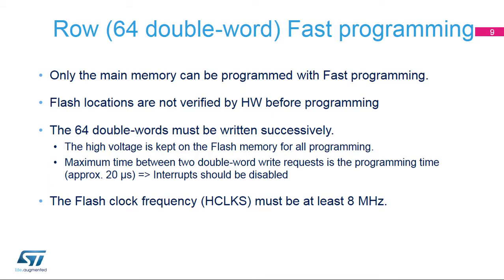A fast programming mode allows programming of 64 double words faster than in standard programming mode. Only the main memory can be programmed in fast programming mode. The flash memory address location contents are not verified by hardware before programming in fast mode. The 64 double words must be written successively, and the high voltage is kept on the flash memory for all programming. The maximum time between two double word write requests is approximately 20 microseconds. Consequently, interrupts should be disabled to ensure this limit is not exceeded. The minimum clock frequency must be at least 8 megahertz in fast programming mode.